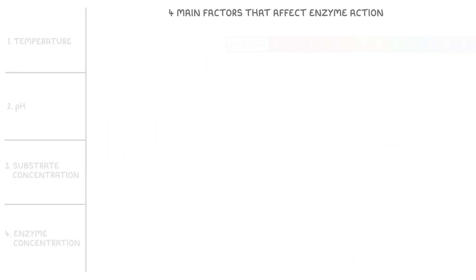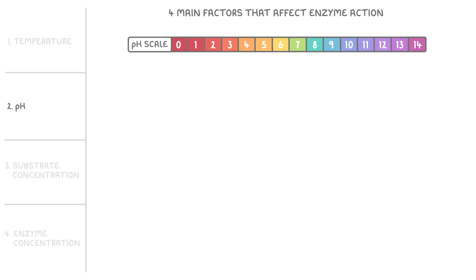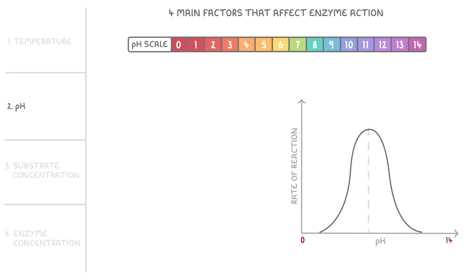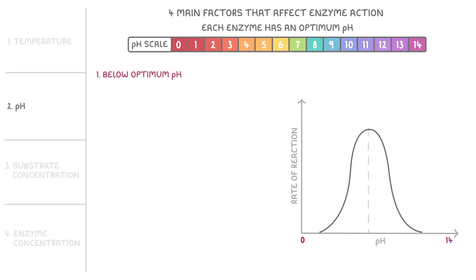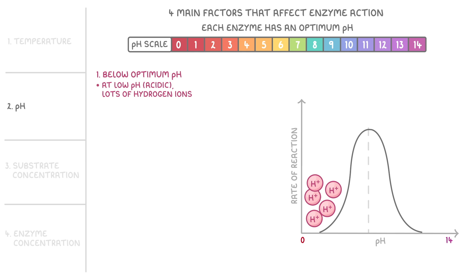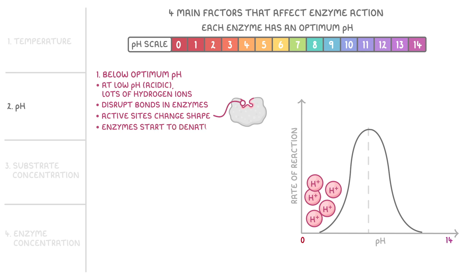Next, let's look at how pH affects enzyme-catalyzed reactions, using a graph of pH versus rate of reaction. Just like for temperature, each enzyme has an optimum pH. Below the optimum pH, especially at low pH in acidic conditions, there are lots of hydrogen ions — H+ ions. Because these H+ ions can disrupt the bonds in the enzymes, when there are lots of them about, the active sites change shape and the enzymes start to denature.